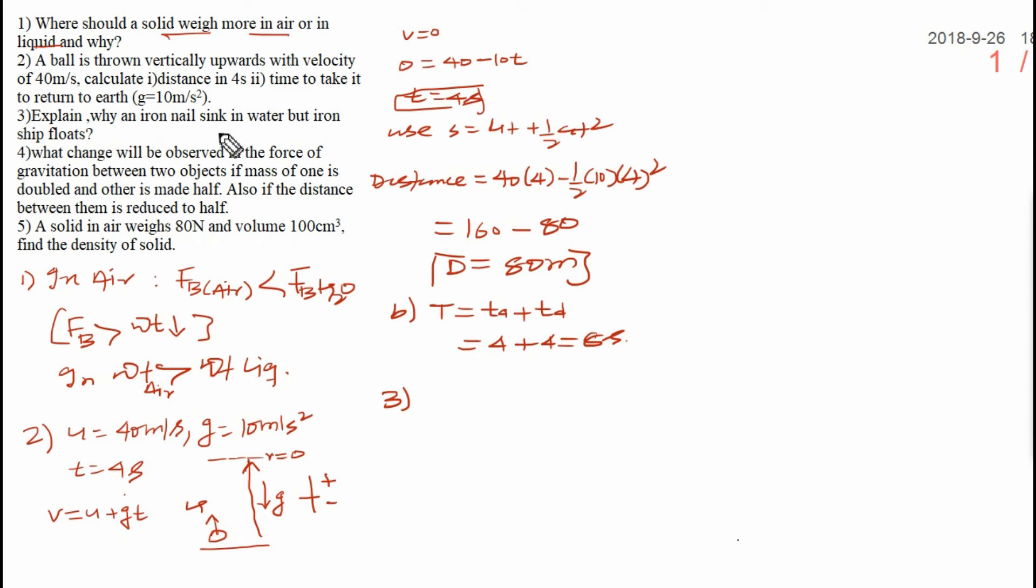Now question number 3. Explain why an iron nail sinks in water but iron ship floats. It depends upon the shape. Shape means density of any body depends upon the volume. You know volume of the iron nail is less and volume of the ship is more.